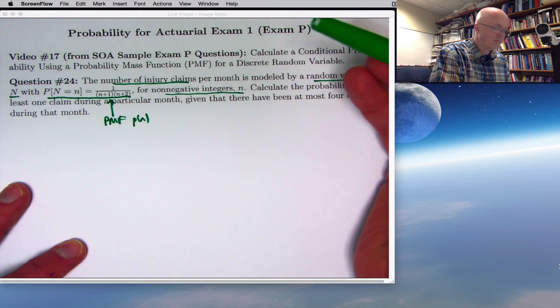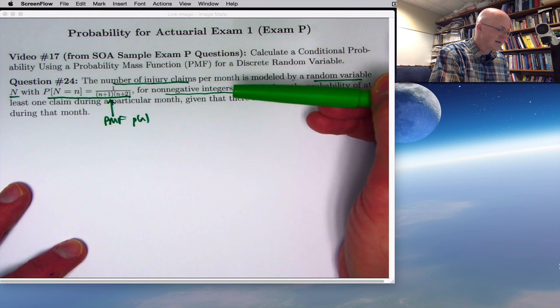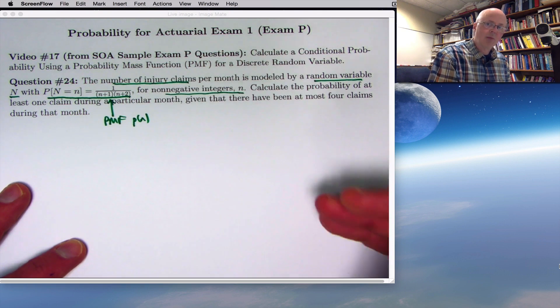The probability that capital N equals 2 is found by plugging in little n equals 2 into this formula, which is going to give you 1 over 3 times 4 is 1 twelfth. So this function gives you probabilities.